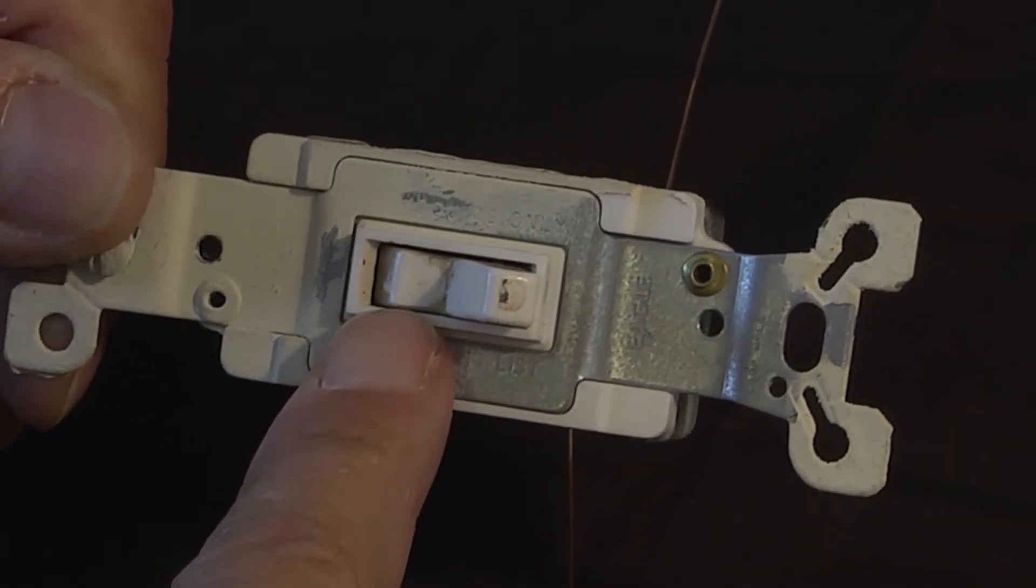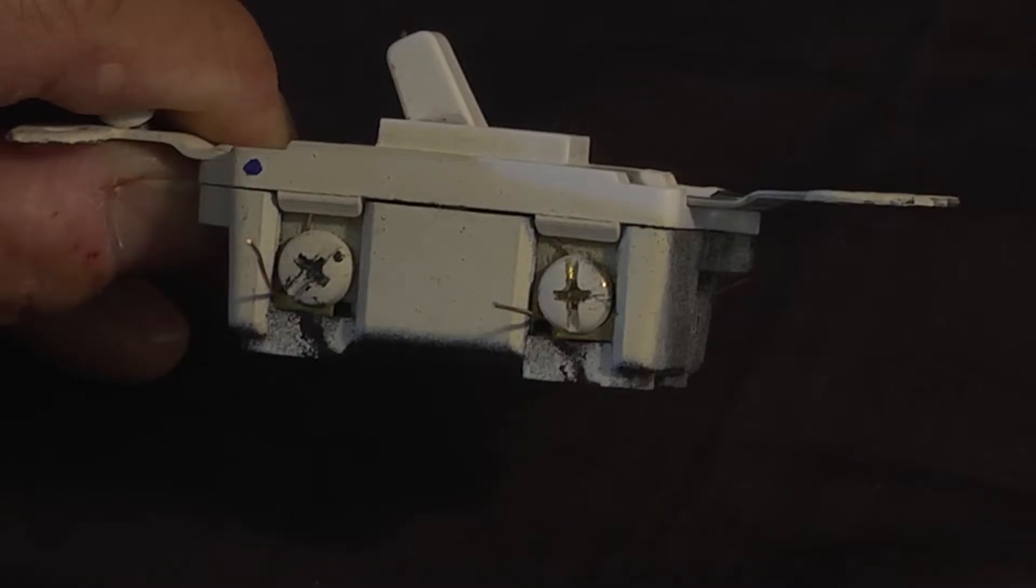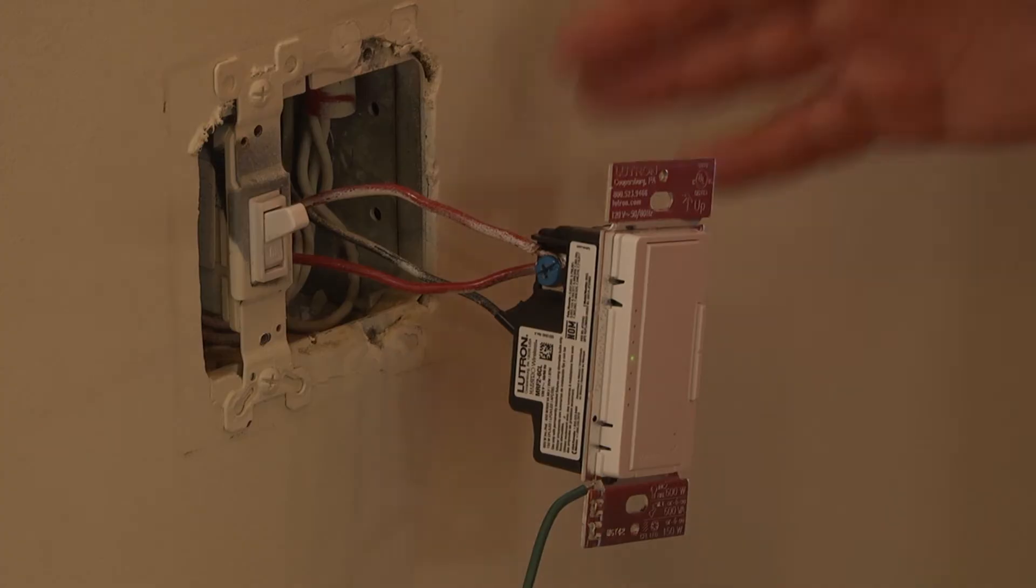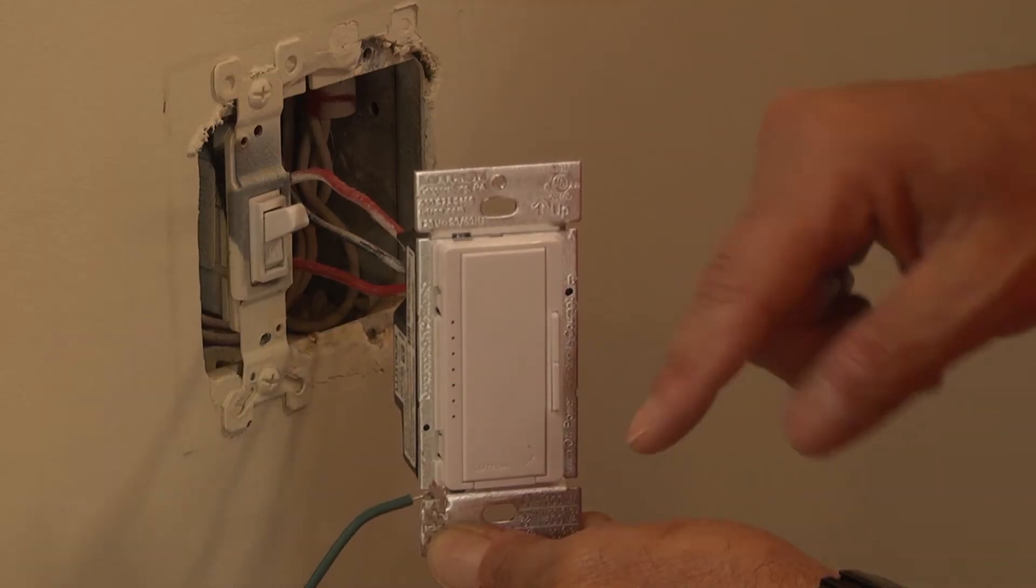Occasionally, you might be confronted with a three-way switch situation where you don't know for sure which screw is the common and which are the travelers. This might happen if you buy a switch that's new and not built exactly the same, or you've taken the wires off and aren't sure which wire was attached to which screw.